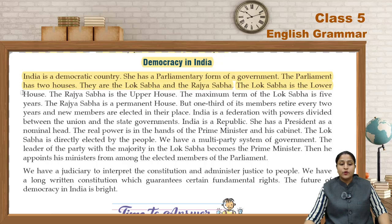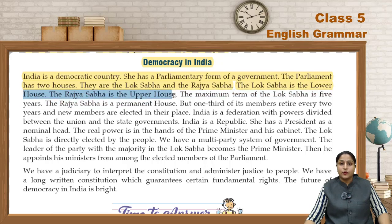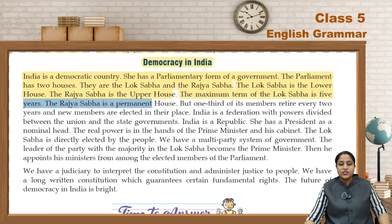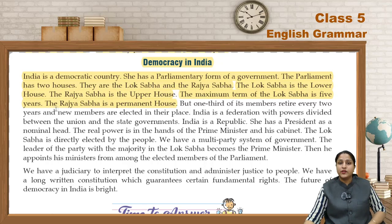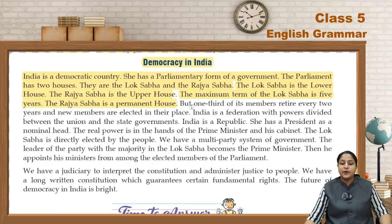The Lok Sabha is the lower house. The Rajya Sabha is the upper house. The maximum term of the Lok Sabha is five years. The Rajya Sabha is a permanent house. Lok Sabha ki maximum term five years hai aur Rajya Sabha ek permanent house hai.